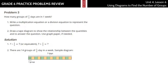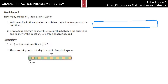In Problem 3, how many groups of half days are in a week? The answer is 14. But let's write a multiplication or division equation to represent the question and draw a tape diagram to show the relationship. Let's draw our tape diagram, starting in blue. A week.